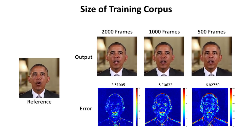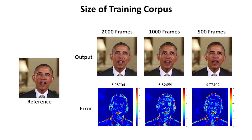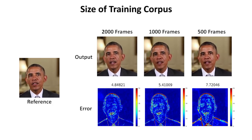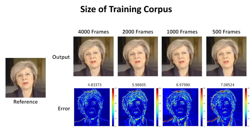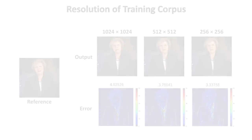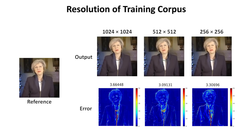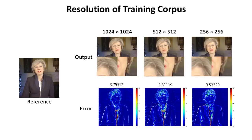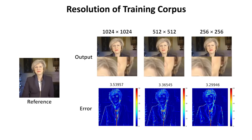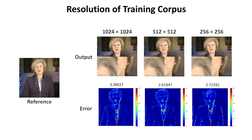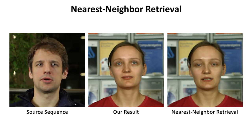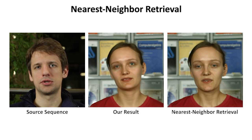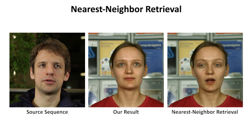We also evaluate the required size of the training corpus. The quality of results improves visibly with larger training sets. The best results are obtained with a full dataset. We now evaluate different resolutions of the training corpus. The quality of results is comparable for different image sizes. However, due to significantly faster network training, we use a resolution of 256x256 pixels for most of our results. We also compare our method with nearest neighbor retrieval. Our approach is trained to generalize the pose and expression spaces and thus it is temporally coherent and better re-enacts the source actor.